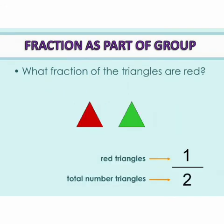See one more example. What fraction of the triangles are red? There are two triangles. One is red and another is green. So, one out of two triangles is red. We say that one by two of the triangles is red.